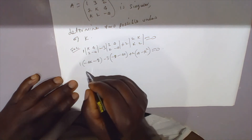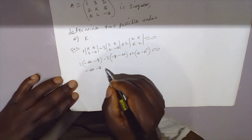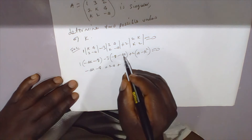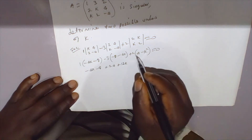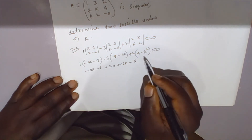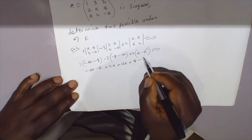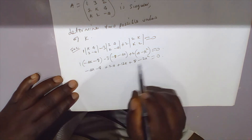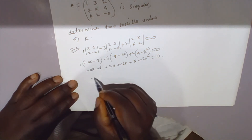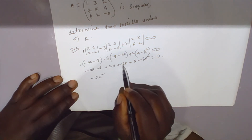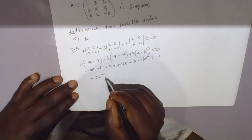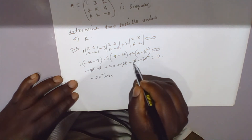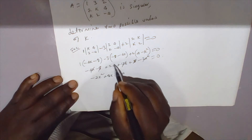Multiplying through by 1, we have: negative 4k minus 8, minus 3 times negative 8 giving plus 24, minus 3 times negative 4k giving plus 12k, plus 2 times 4 giving plus 8, plus 2k, minus 2k squared. The terms negative 8 and plus 8 cancel. Collecting: negative 2k squared plus 8k plus 12 equals zero.